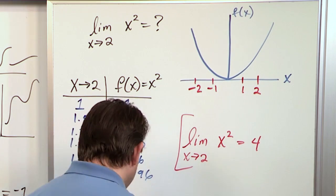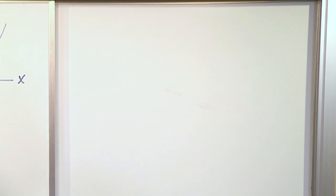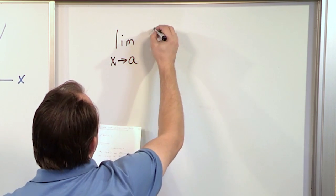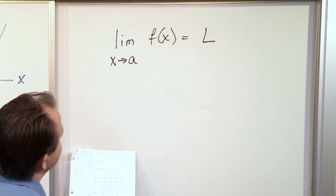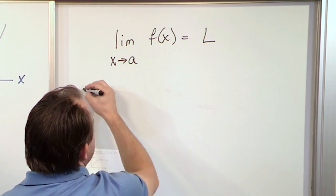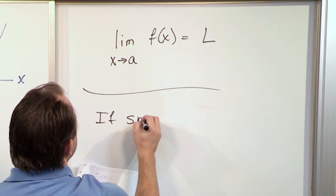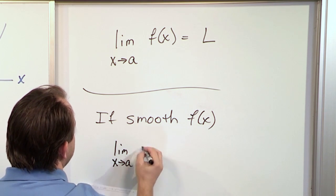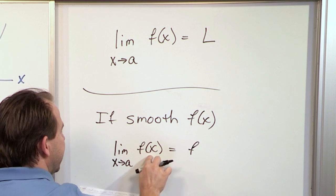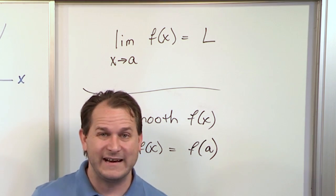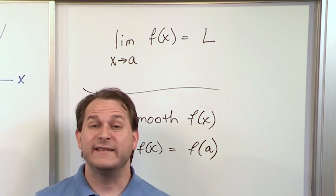In general, what you'll see in your book is written as: the limit as x approaches some number a of f(x) equals L. That is the limit of f(x) as x approaches a. Practically speaking, if it's a smooth function, the limit as x approaches a of f(x) is just f(a) — you plug in the value of a. This only works for smooth functions. If it's not smooth, you can't do that and need other techniques, like making a table, graphing it, or simplifying another way.